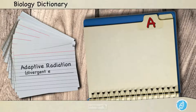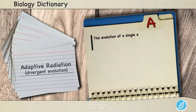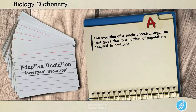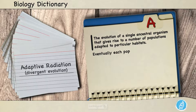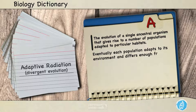Adaptive radiation, or divergent evolution, is the evolution of a single ancestral organism that gives rise to a number of populations adapted to particular habitats. Eventually, each population adapts to its environment and differs enough from its ancestor to be classified as a new species.